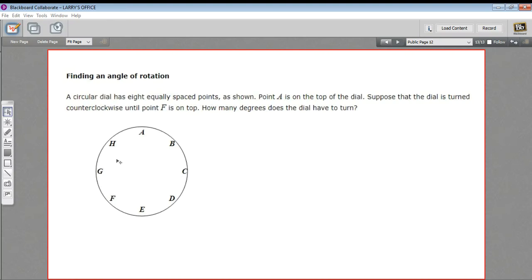In this problem, we're being asked to find an angle of rotation. We have a dial here, and we're told that each of these letters represents eight equally spaced points on the dial.